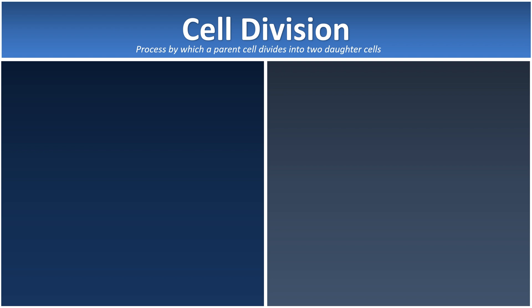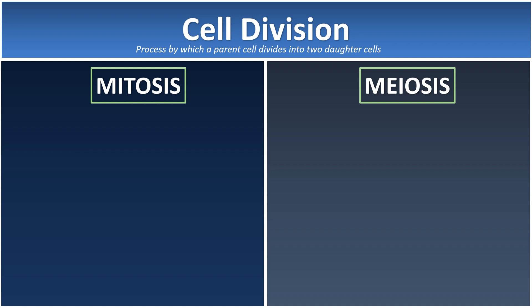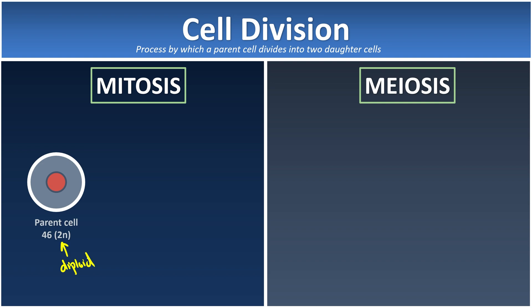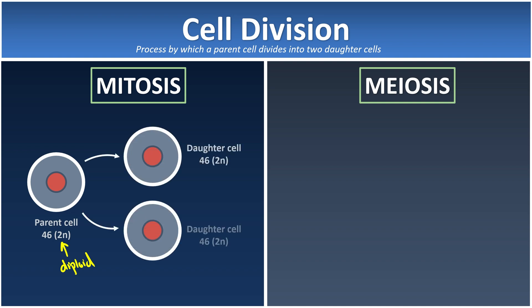We have two kinds of cell division. The first one is mitosis, and the second one is meiosis. In mitosis, let's say we have a parent cell that consists of 46 chromosomes. The 2n indicates that it's a diploid cell. After the parent cell undergoes mitosis, it will divide into two identical daughter cells, where both daughter cells consist of the same number of chromosomes as their parent.